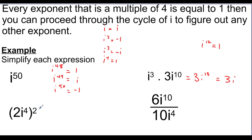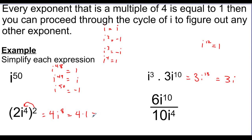For the problem 2i to the fourth, all squared: the exponent rule says square both parts. 2 squared is 4, and squaring i to the fourth means multiplying exponents to get i to the eighth. Since 8 is a multiple of 4, i to the eighth equals 1. So this is 4 times 1, which is just 4. No more i at all — it's completely gone.